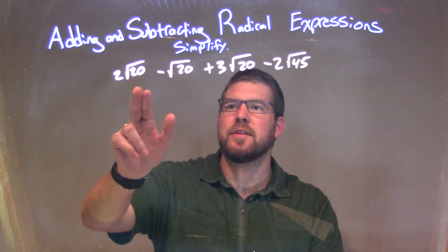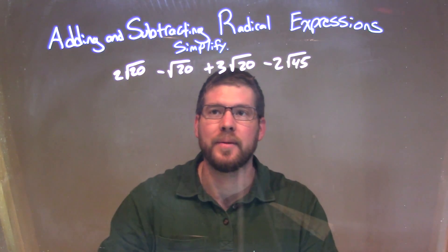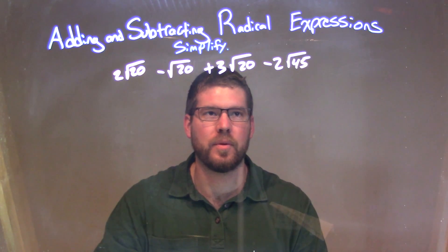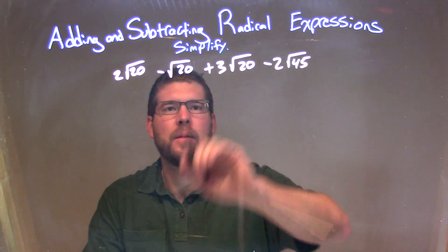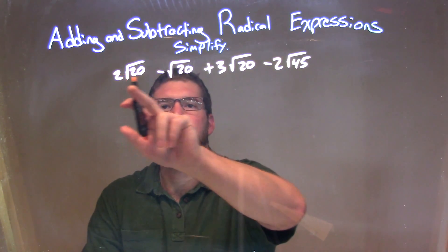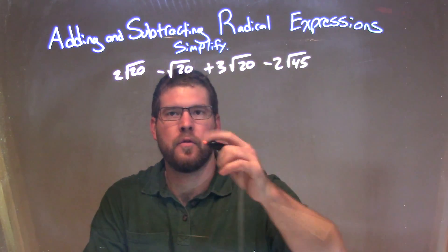What I see here is 3 square roots that are all square root of 20. I'm going to combine them first. So I look at the number that's up front: we have 2, a minus 1, and a plus 3. Well, 2 minus 1 is a positive 1, plus 3 is a positive 4.